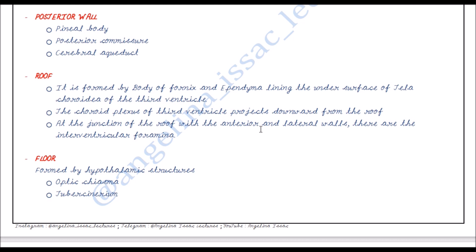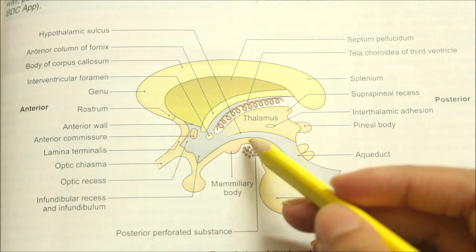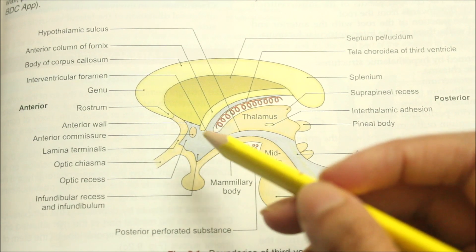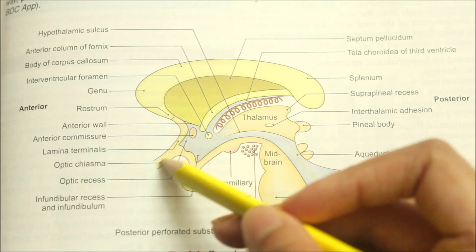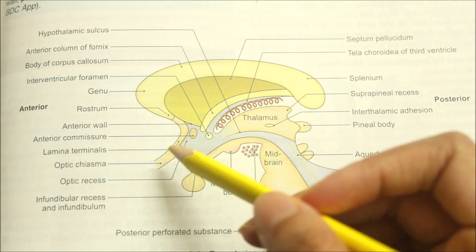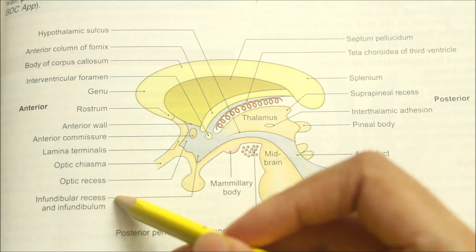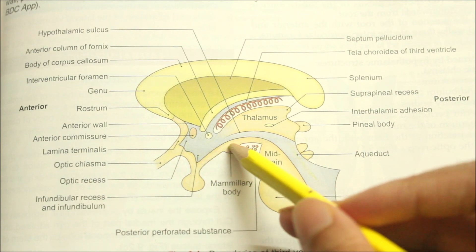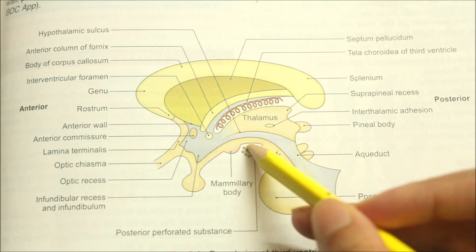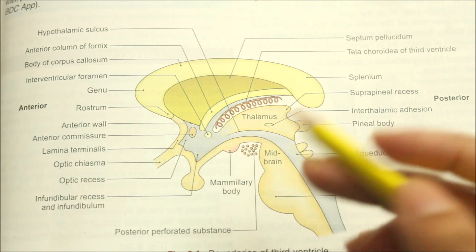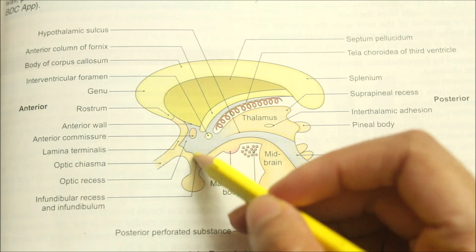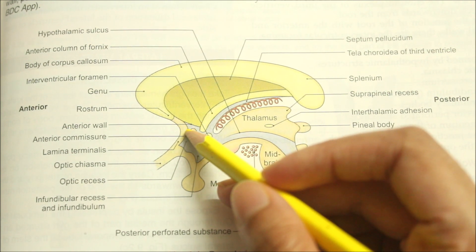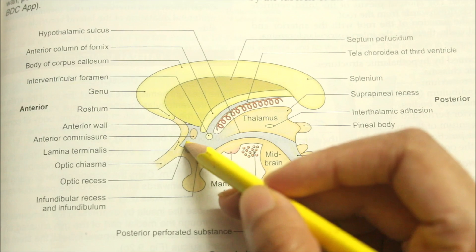Looking at the floor of the third ventricle, it is formed by the hypothalamic structures: the optic chiasma, the tuber cinereum, the infundibulum, the mammillary body, the posterior perforated substance, and the tegmentum of the midbrain. At the junction of the floor with the anterior wall, there is the optic recess.